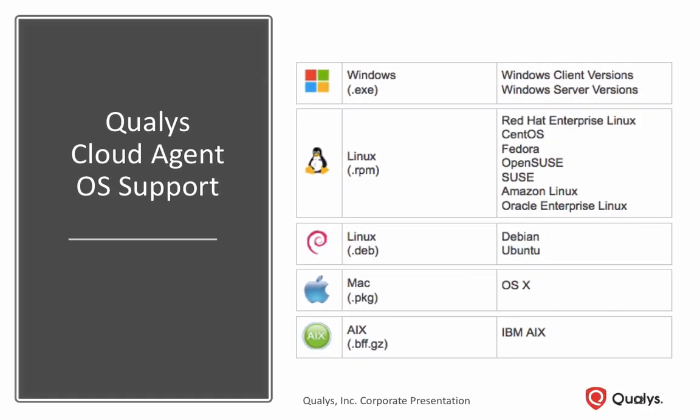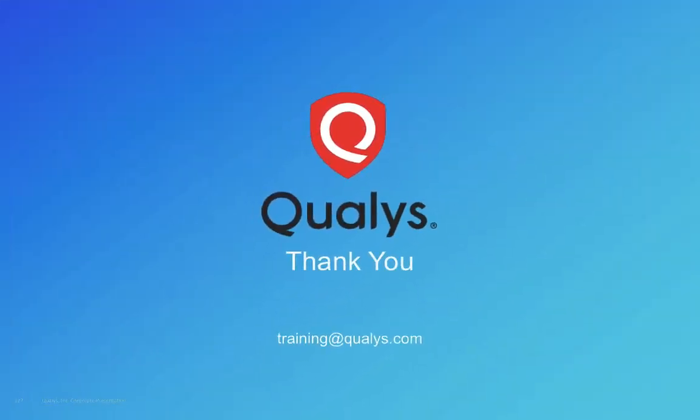Qualys Cloud Agent supports the following operating systems: Windows; RPM-based versions of Linux including Red Hat, Oracle, CentOS, and others; Debian and Ubuntu Linux; Mac OS X; and IBM AIX. Thank you for watching this Qualys training video.